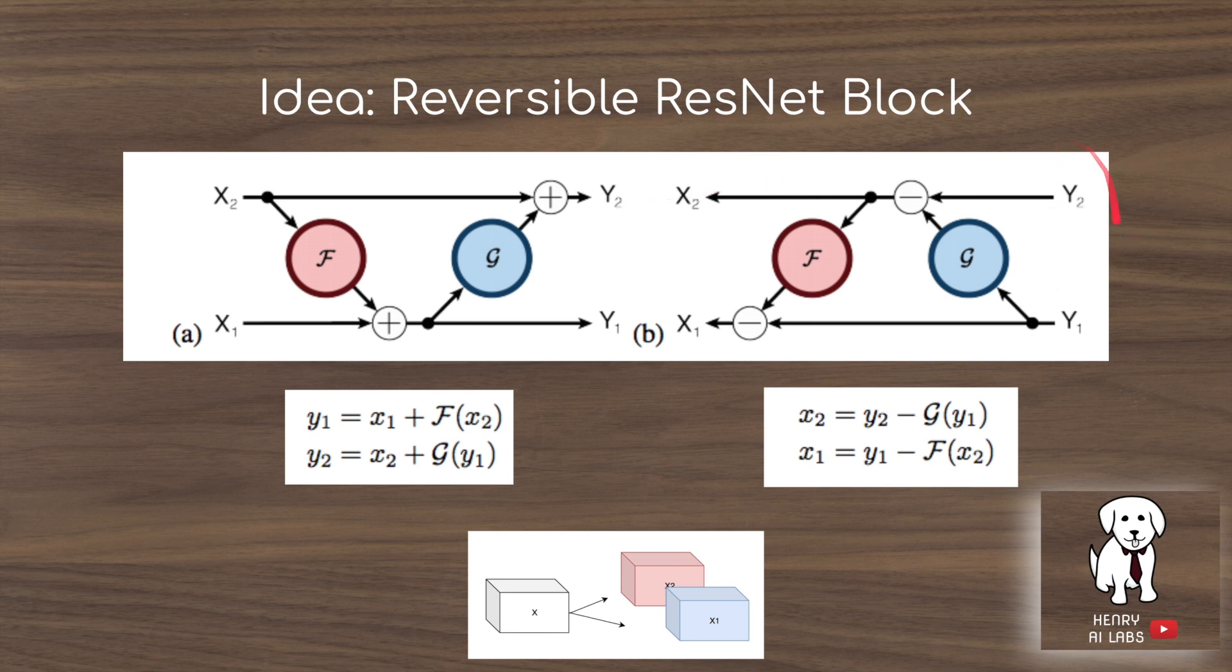In this sense, if you have y, you split it up into y1 and y2, and then you use these intermediate functions to get back the x1 and x2. This way, you don't need to store the intermediate activations. You just need to store the activation from the very last layer, and then you can use this propagation rule to derive the activations throughout the network.